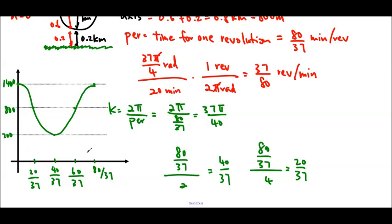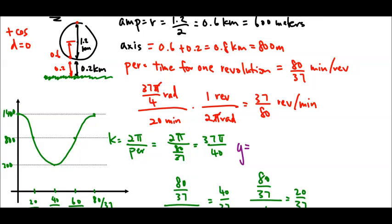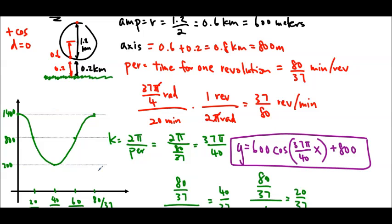So now we have our x values and our y values. And we've modeled it using the graph. Let's write that equation out. y is equal to, I'm using positive cos. cos, and my amplitude was 600, I believe. Yes, 600. So 600 cos k, 37π over 40. This does the conversion to radians for us. Times x plus 800, which is our axis. And there is our equation. Here is our graph. And we're done.